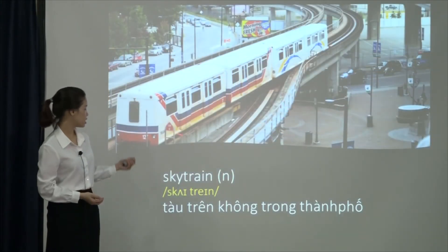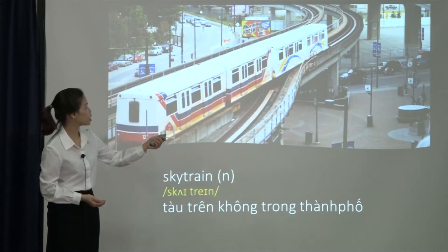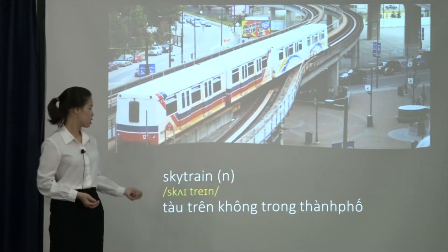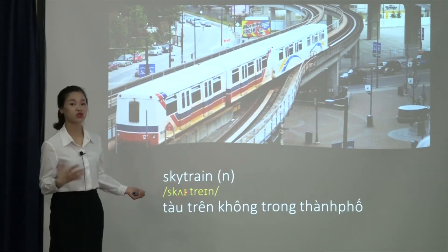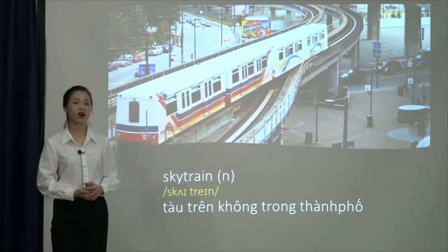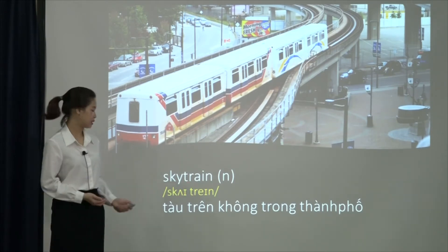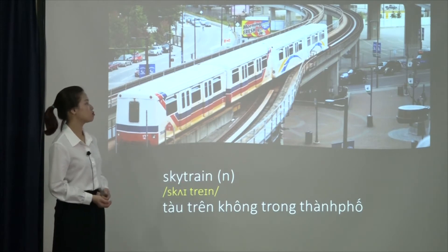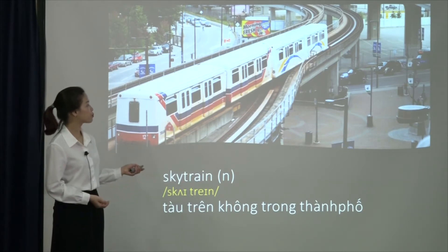Đây chính là hình ảnh của Skytrain nằm ở trên cao. 'Sky' là bầu trời, 'train' là tàu lửa. Nối lại ta có 'Skytrain' — tức là một cái tàu ở trên không trong thành phố.